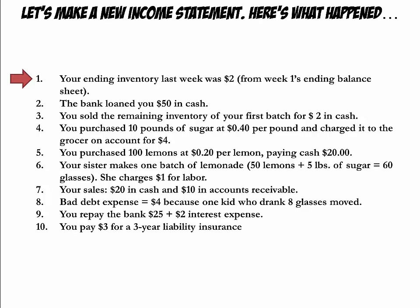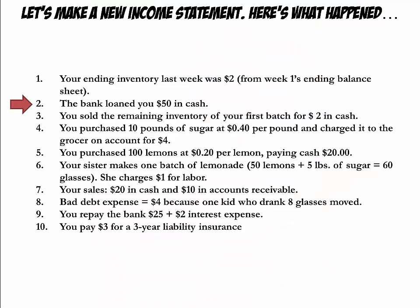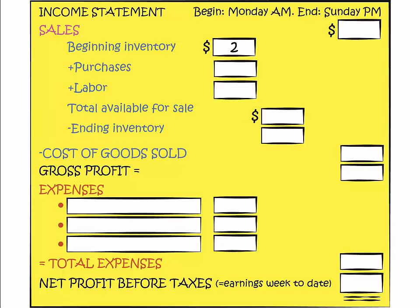The first item is that your ending inventory of last week was $2. It is now your beginning inventory, so we add $2 in the blank next to beginning inventory. You also went to the bank and managed to get a $50 loan. The loan itself does not affect the income statement, because it is not something you earned through sales and it is not considered an expense of doing business.